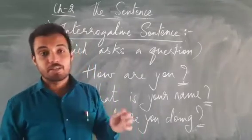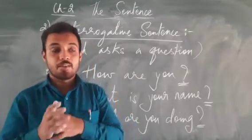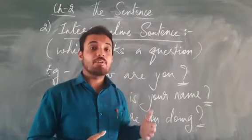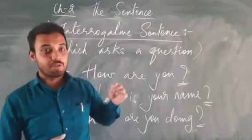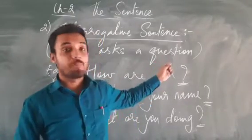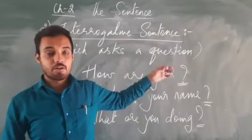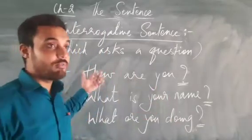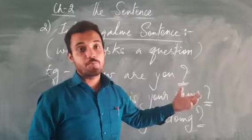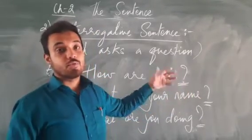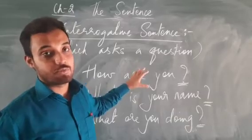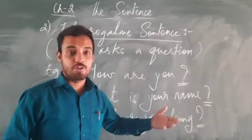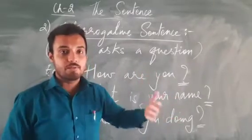Now what are the things we have to keep in mind while writing a sentence in interrogative form? The most important thing is the question mark. Whenever we write an interrogative sentence, we have to end the sentence with the proper punctuation — that is a question mark. Until and unless we put a question mark, it won't be counted as a question. Without proper punctuation, people won't be able to identify whether you have written a statement or a question.